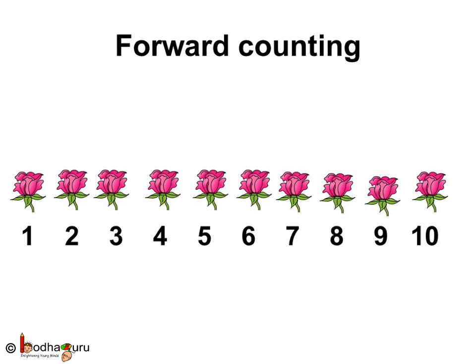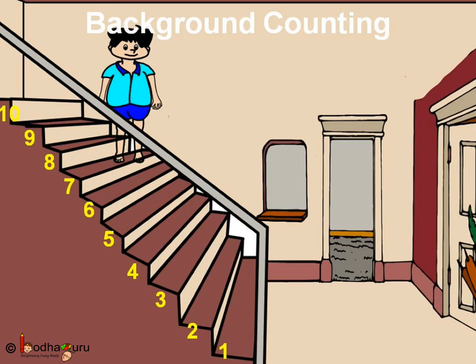So, now you know about backward counting. Normally, we do forward counting which is 1, 2, 3, 4, 5, 6, 7, 8, 9, 10. But, if you are coming down from the stairs, then, how do we count? 10, 9, 8, 7, 6, 5, 4, 3, 2, 1. Yes! You have reached the ground floor. So, this is also called backward counting.